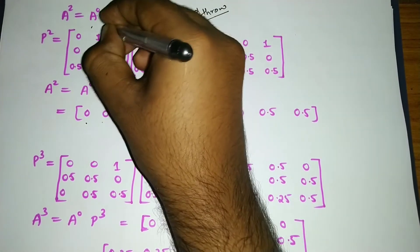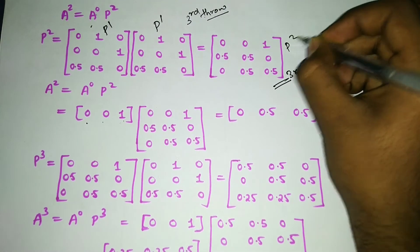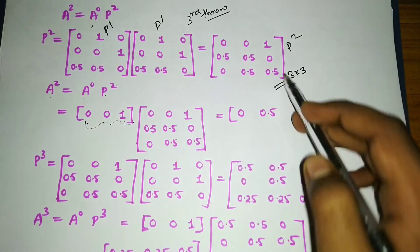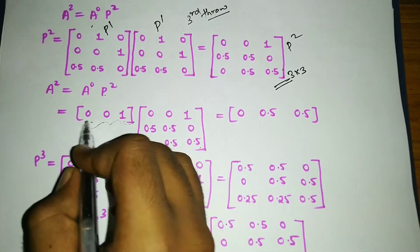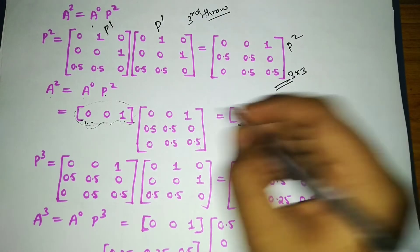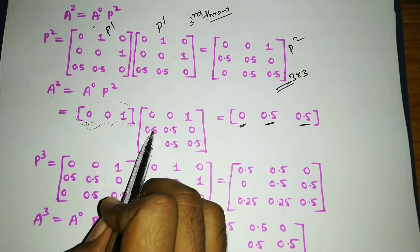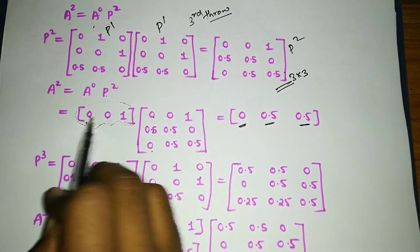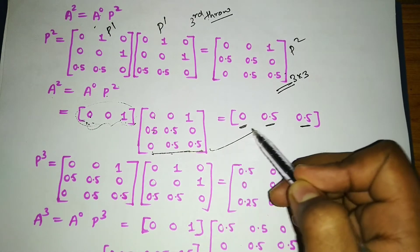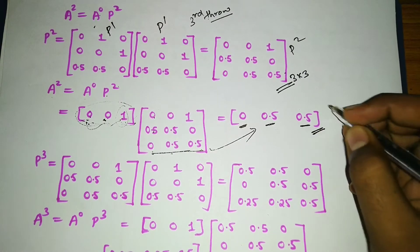P² is a 3×3 matrix result. Then a^2 = a^0 × P². Multiplying row by column: zero into zero plus zero into 0.5 plus one into zero gives zero; zero into zero plus zero into 0.5 plus one into 0.5 gives 0.5. Since the initial vector has 1 only in C's position, the result is essentially the third row of P².